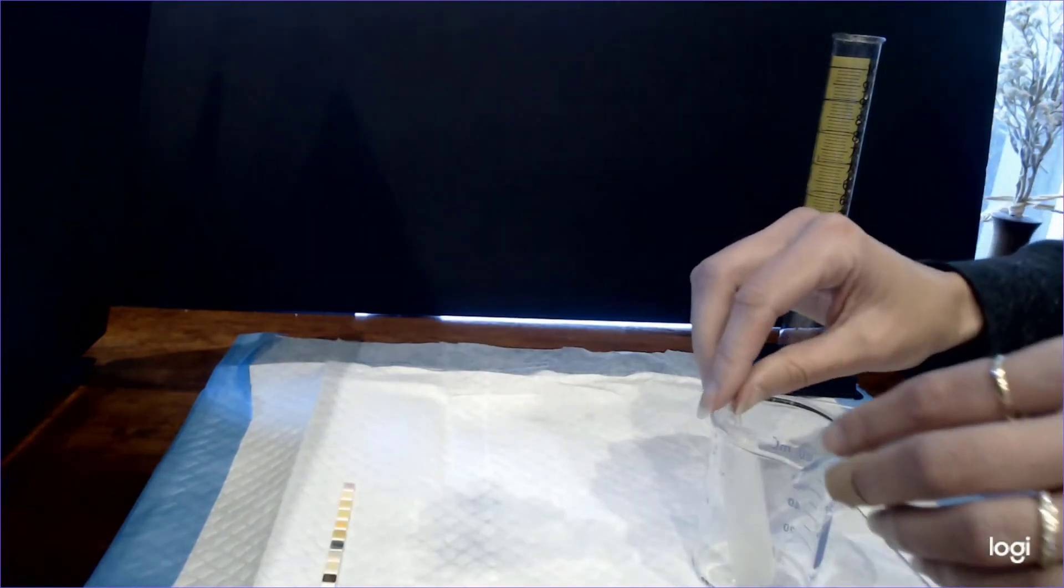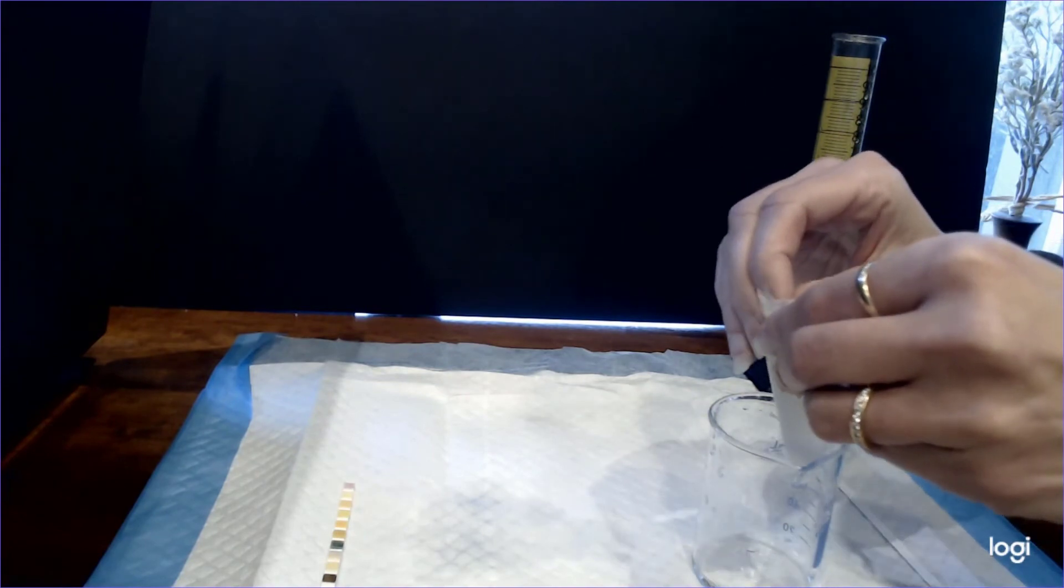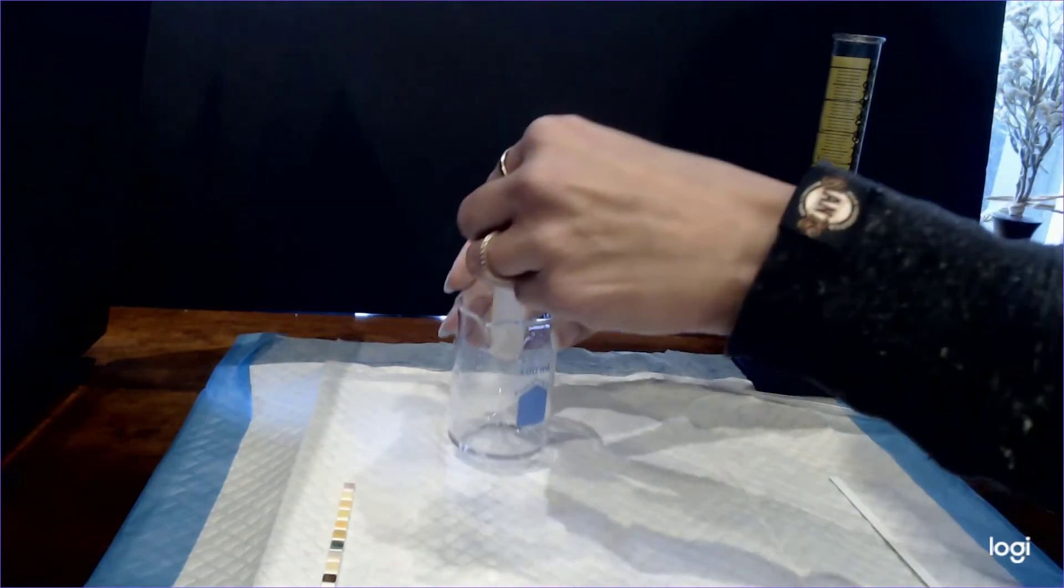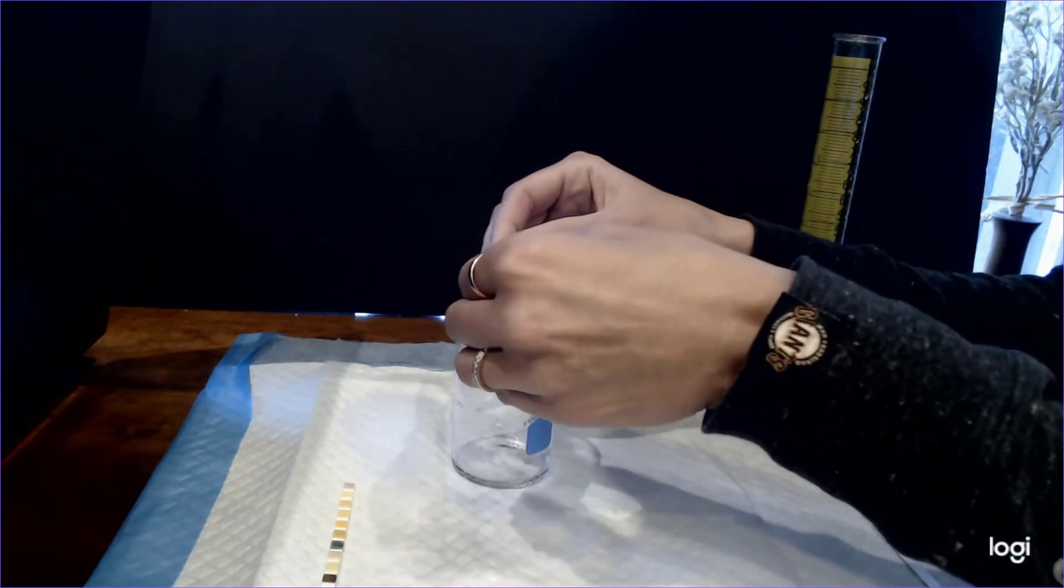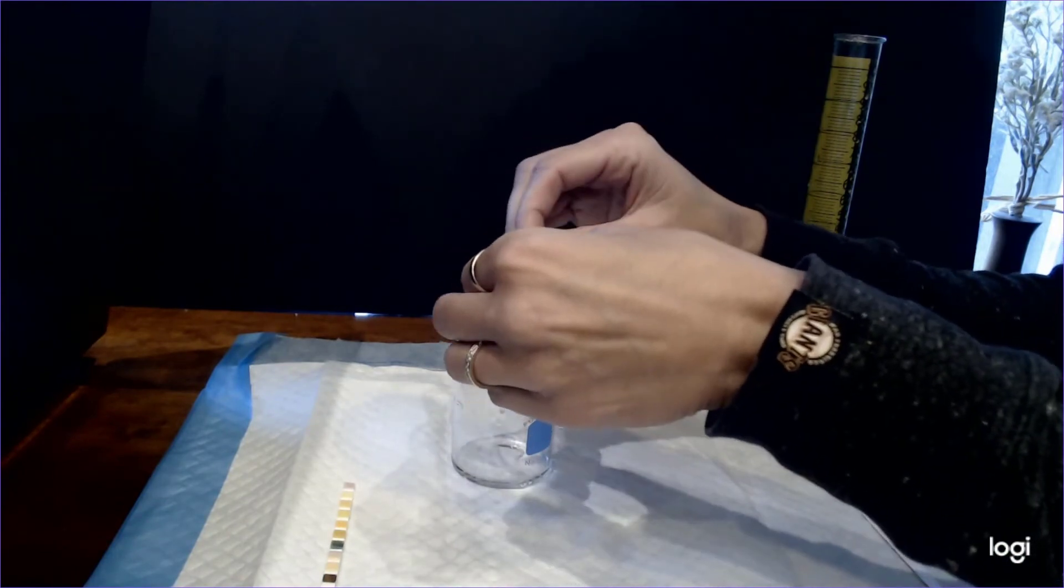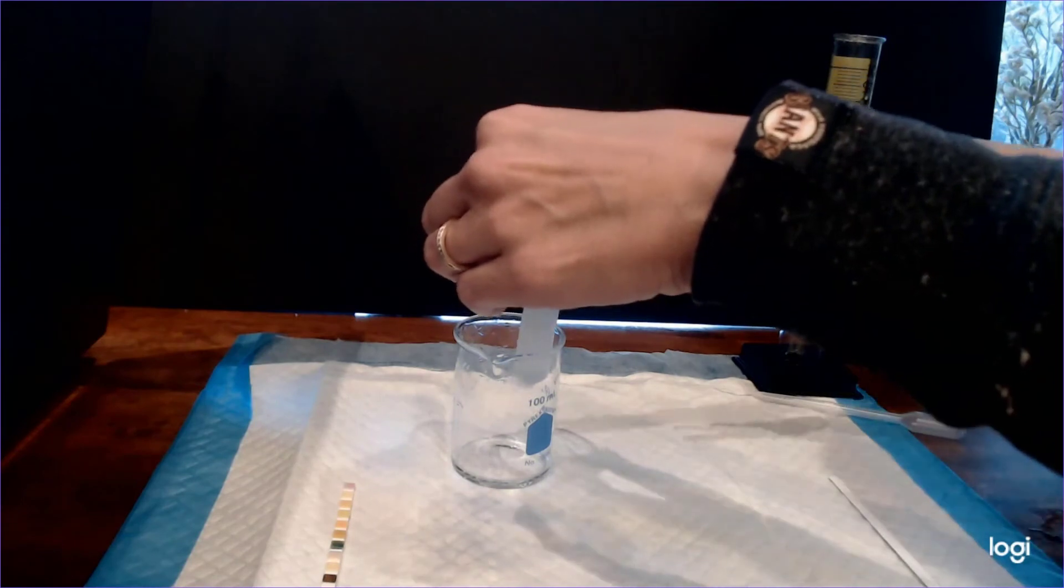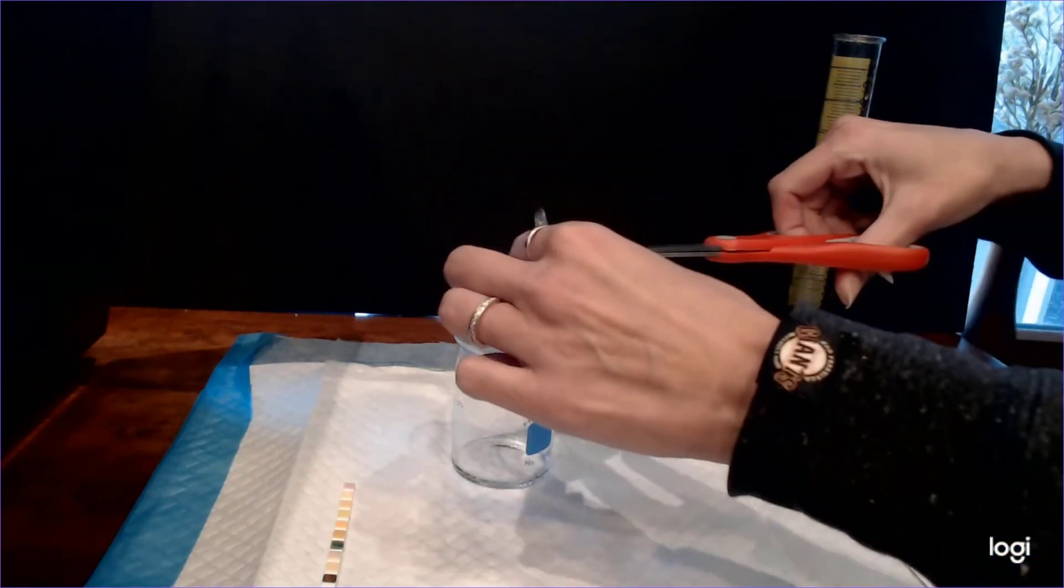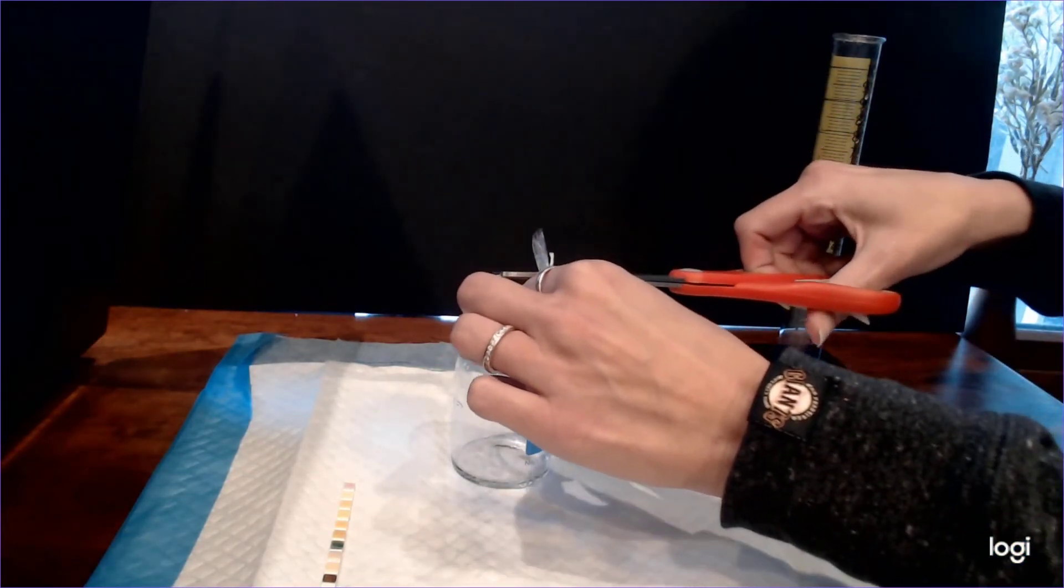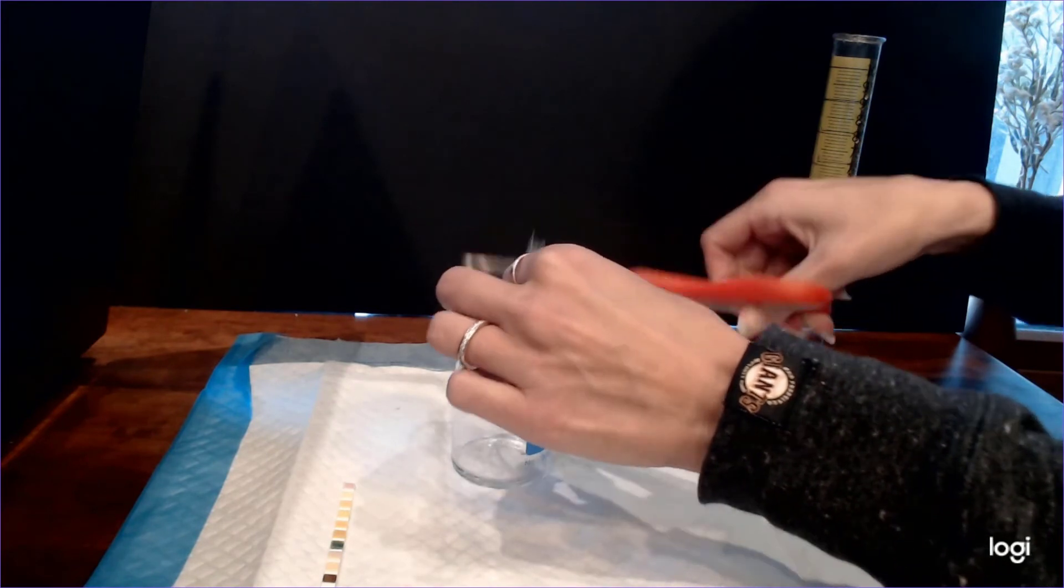Alright our last step is just basically to confirm that there is in fact glucose and protein in our dialysis bag so that we can get a positive control for what glucose and protein looks like on the dipstick.